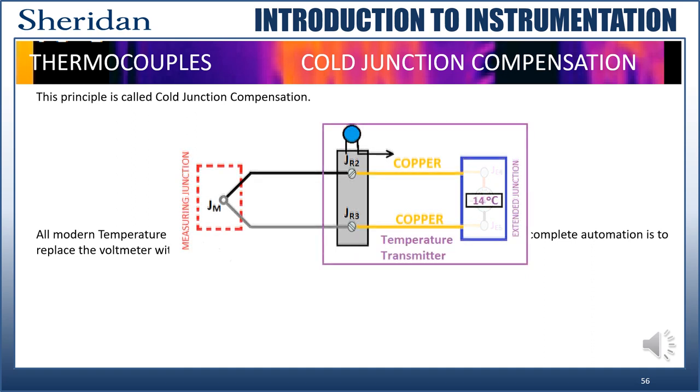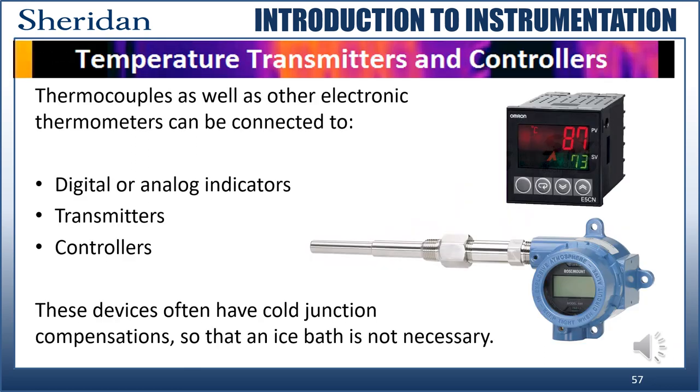All modern temperature transmitters have this feature. So if the reference junction is measured at, say, 14 degrees, then the transmitter compensates for the shift and accurately calculates the measuring junction's voltage and hence its temperature. The voltages produced by a thermocouple are very small. In almost all instances, they all have to be amplified to an industry standard signal. Thermocouples can be connected to digital or analog indicators, transmitters, or controllers. Most of these devices have a cold junction compensation, so an ice bath is not necessary.